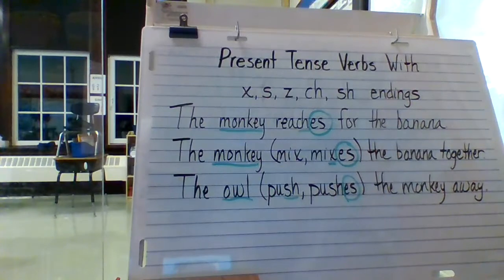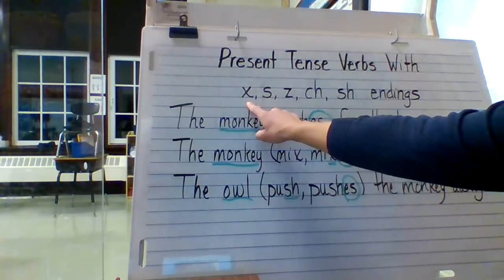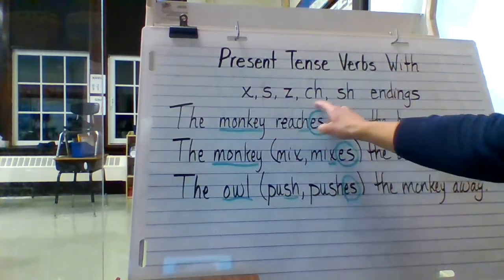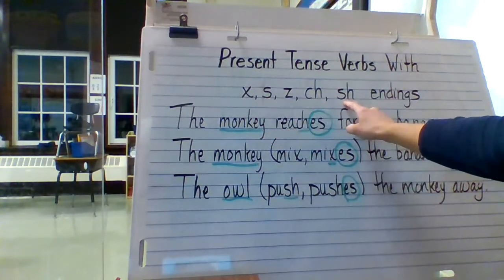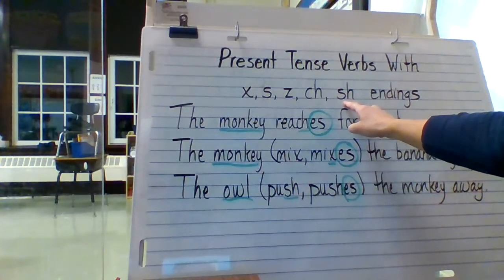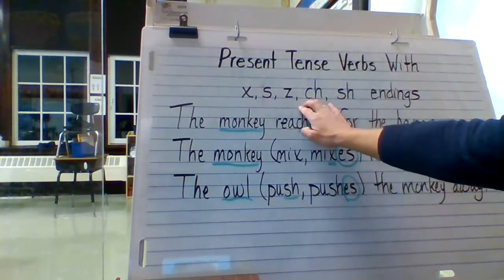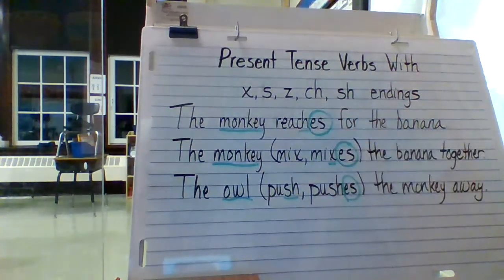So again, what we're doing is: when we have verbs that end in the letter X, S, Z, CH, or SH, and we're talking about verbs in the present tense — when they end in these letters, rather than just add S to them, we need to add ES.